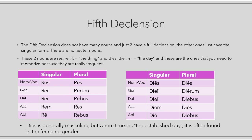You just need to memorize the forms, though you will find many endings familiar — for example, the ending in '-s' for the nominative and accusative plural typical of the third declension, the ending '-ebus', and '-erum' for the genitive plural. One observation: 'dies' is generally masculine, but when it means the established or fixed day, it is often found in the feminine gender, though this is not something you will find very frequently.